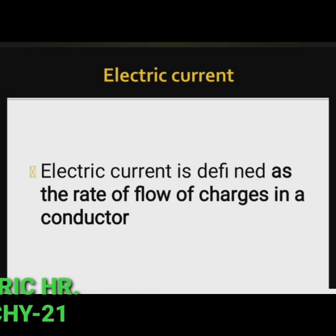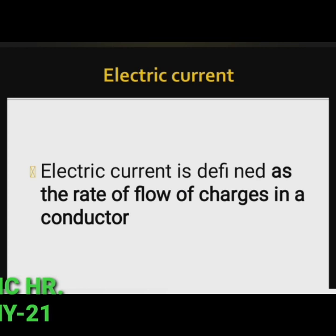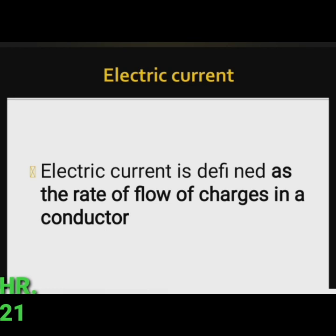So, what is electric current? It is defined as the rate of flow of charges in a conductor — the motion of electric charges through a conductor. In a battery, the electric current passes from the positive terminal to the negative terminal, that is from higher electric potential to lower electric potential through a wire.